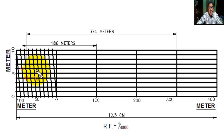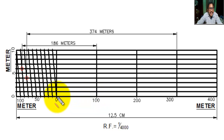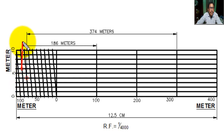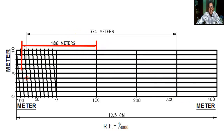Again, we measure and mark a distance of 186 meters. That means 100 on the main division, 80 on the subdivision, and 6 meters on the diagonal — 1, 2, 3, 4, 5, 6. From this point we draw a vertical line, and from this point we draw a vertical line. This is the 186 meters.